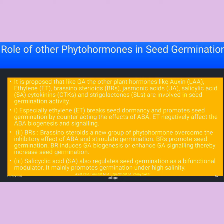It is proposed that plant hormones like GA, auxin, ethylene, brassinosteroids, jasmonic acid, salicylic acid, cytokinins, and strigolactones are all involved in seed germination activity. Especially, ethylene breaks seed dormancy and promotes seed germination, but counters the activity of ABA.